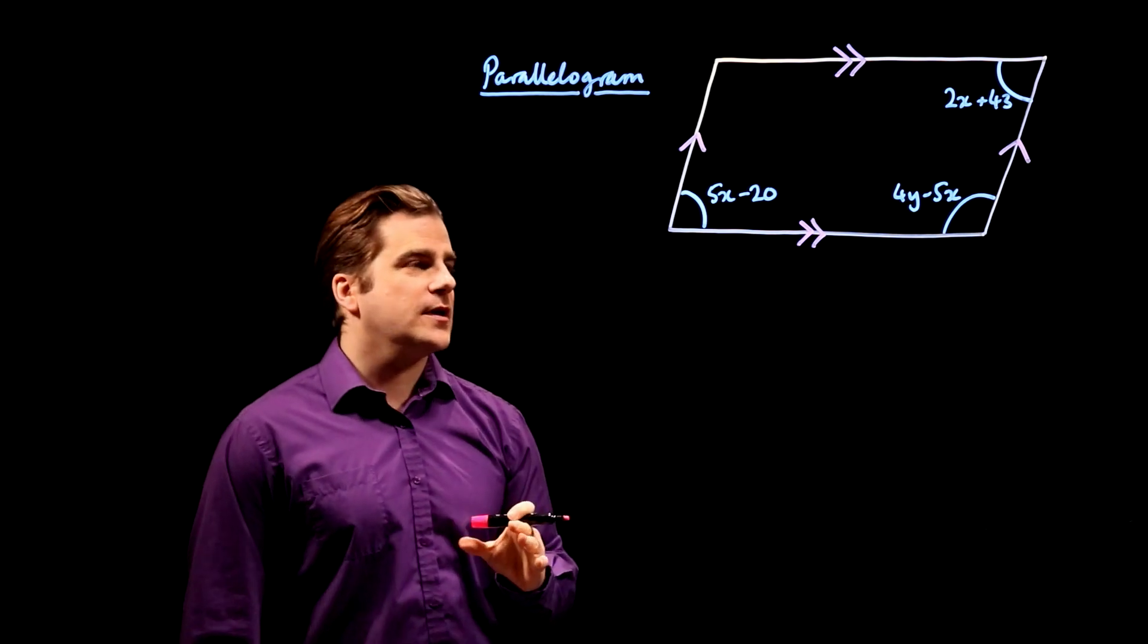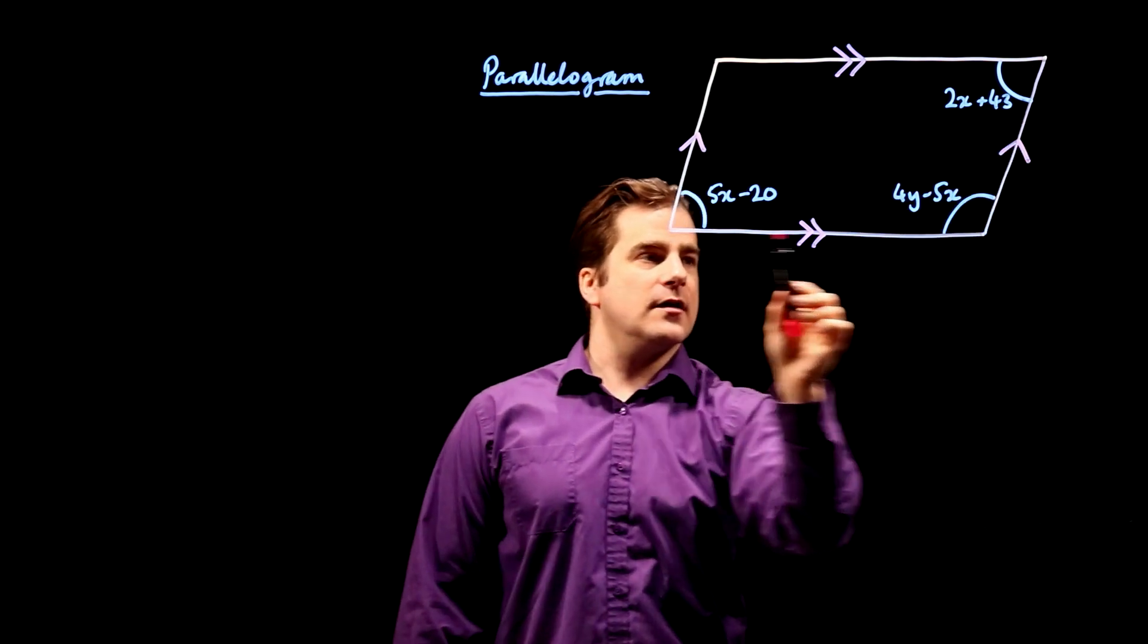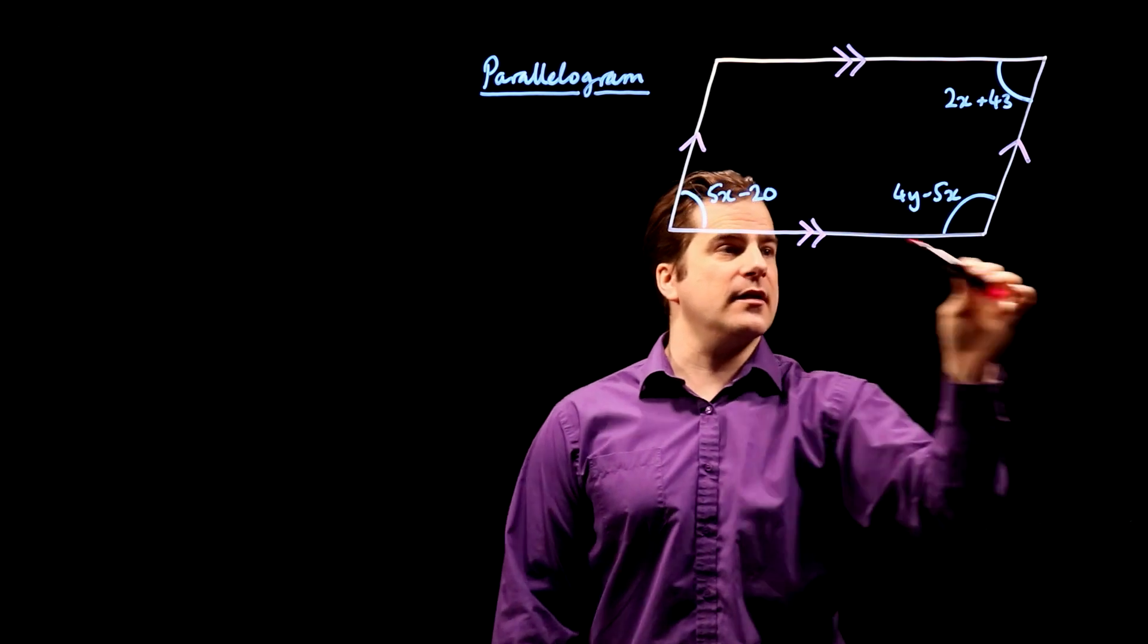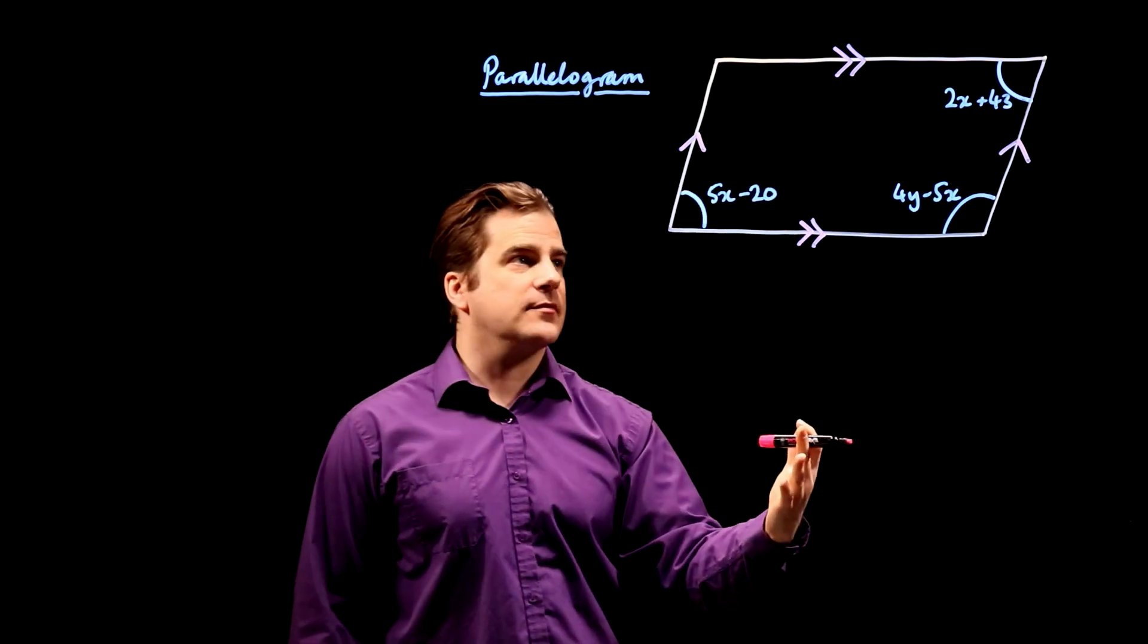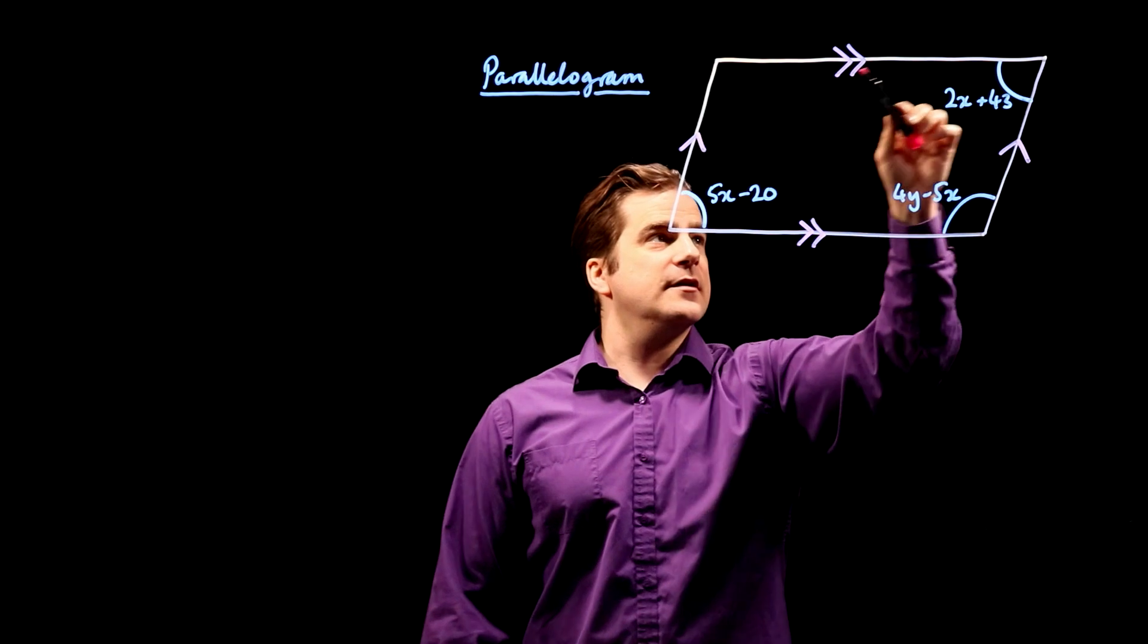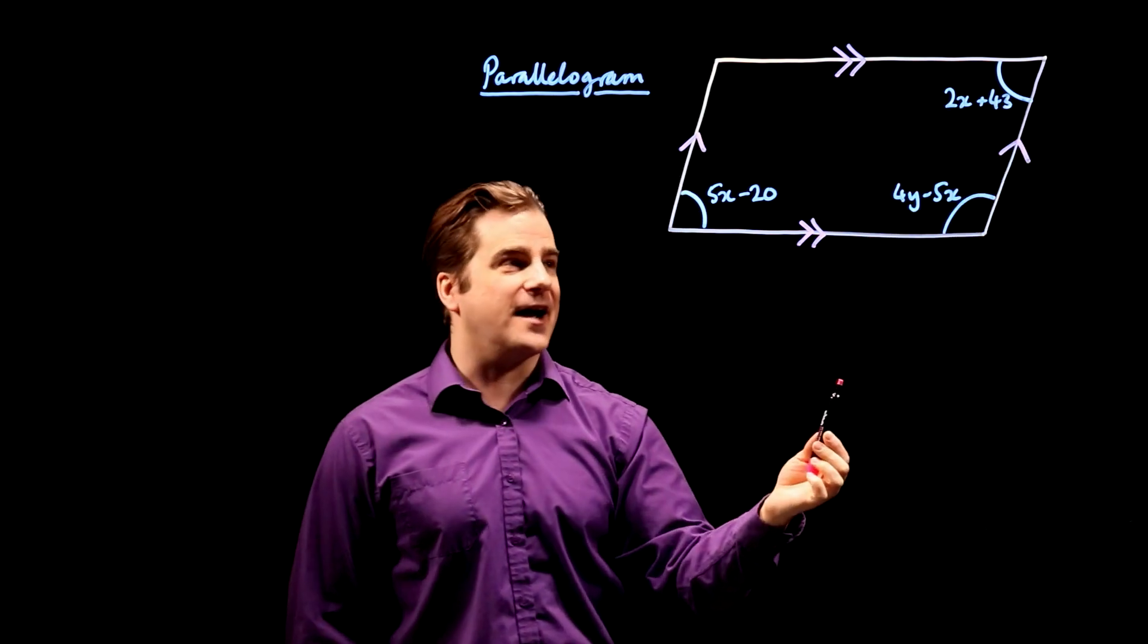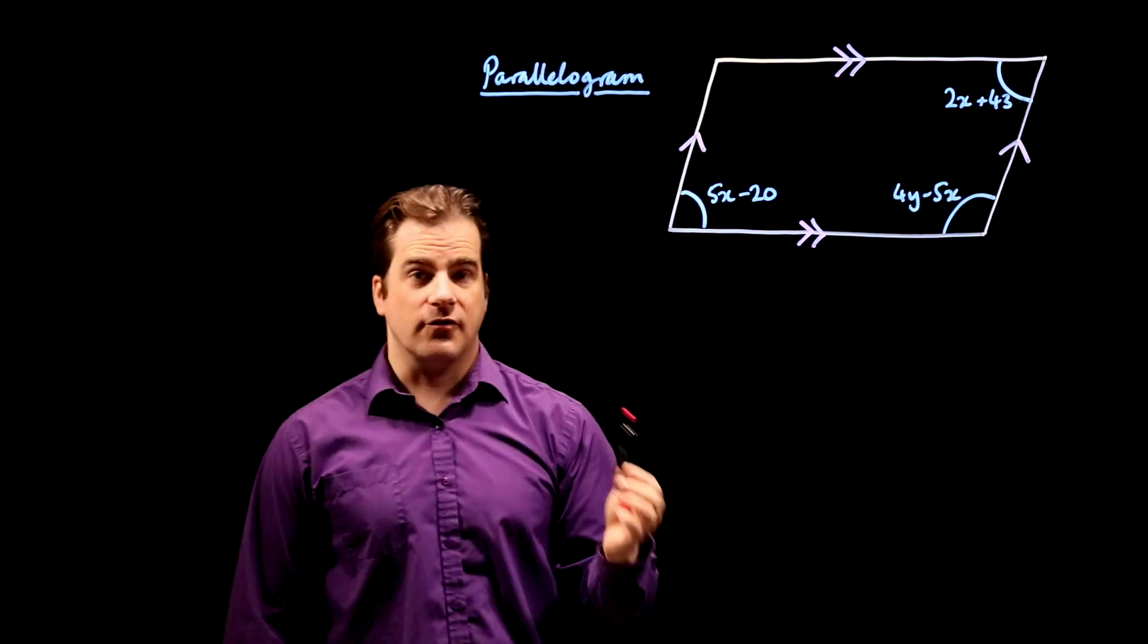So, because these two lines are parallel, and we have another line crossing these two parallel lines, we can use z, f and c angles. And in this case, we're going to use the c angle. Here is our c, it's a backwards letter c, but it's a c angle. And c angles add up to 180.